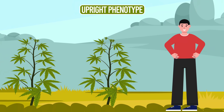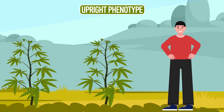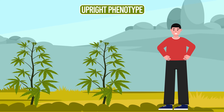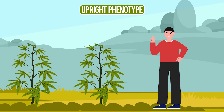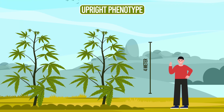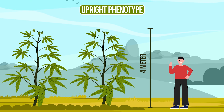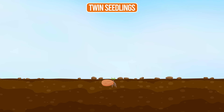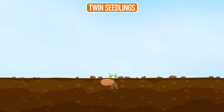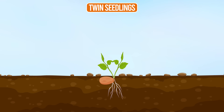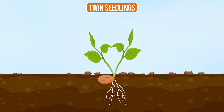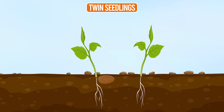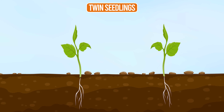The upright phenotype is a mutation where the cannabis plant has become more like a Christmas tree, growing up to 4 meters in height. Twin seedlings is a common mutation that results from the creation of two taproots from one seed, which can be carefully separated.